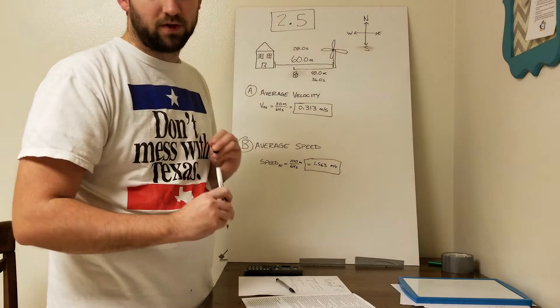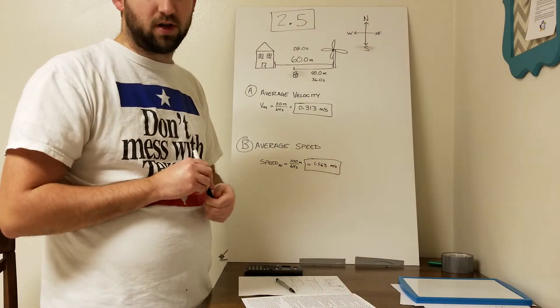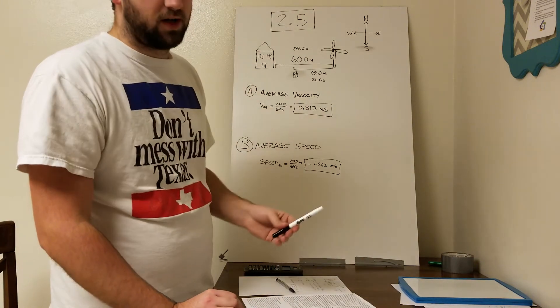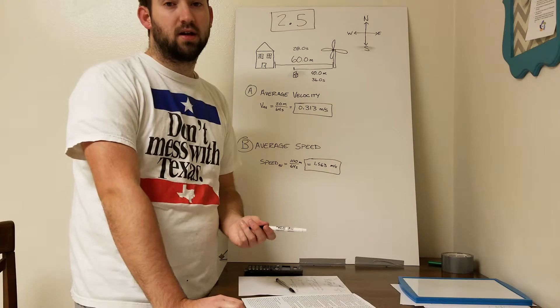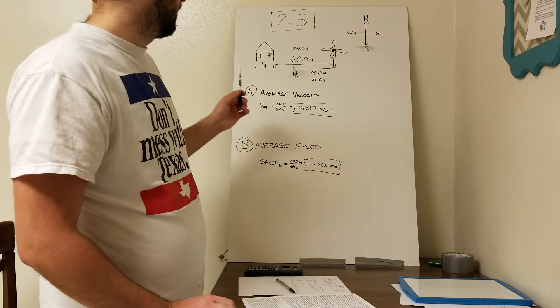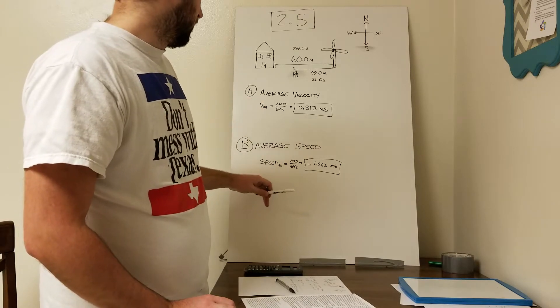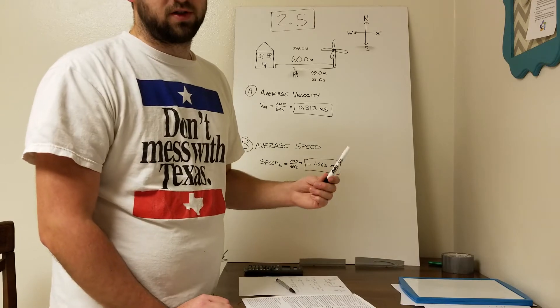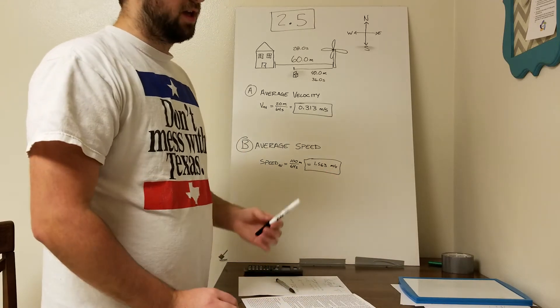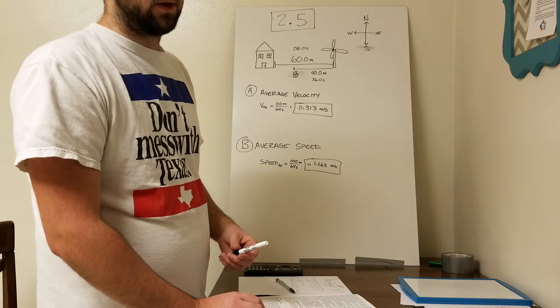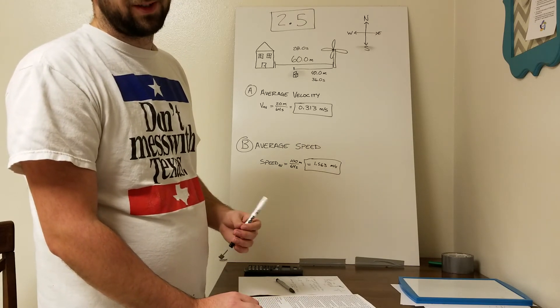That's all for this problem. Just to summarize what we've done: to find the average velocity, we had to find the displacement and put that over the change in time. Then for part B, the average speed, instead of using the displacement, we use the total distance traveled over once again the change in time. Hopefully this helps you out, and we'll see you in the next problem.